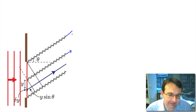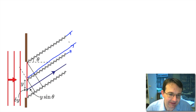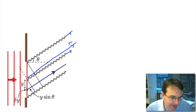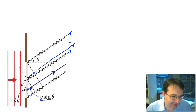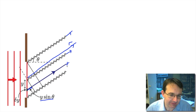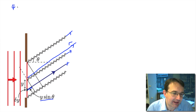Here we have a diagram showing a single slit illuminated by coherent light — plane waves where the phase is the same all the way along the slit. I've drawn parallel rays of light going off to a screen a long distance away, at distance R from the center of the slit. A part of the wavefront at position y travels an extra path length of y sin θ compared to the central ray.